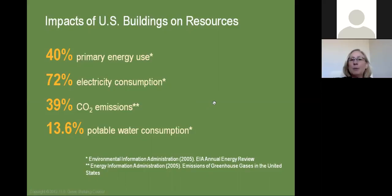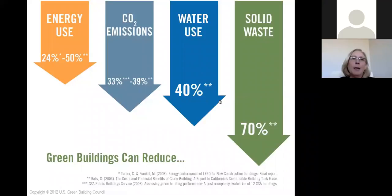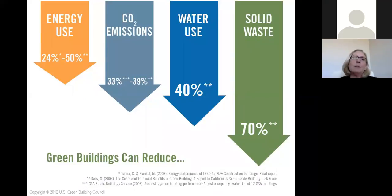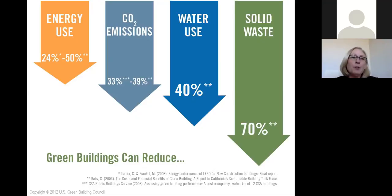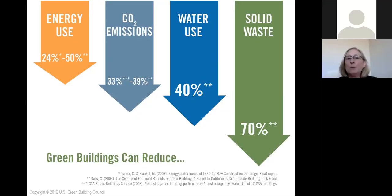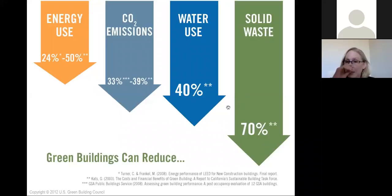Those are interesting breakdowns of consumption for our buildings. What kind of useful impacts can we make by learning about sustainability principles and best practices and applying them to the properties that we touch? Whether we're negotiating a lease in an office building, assisting a client with a site location for commercial property, or managing properties themselves, you have opportunities to reduce energy use anywhere from 24% to 50%, CO2 emissions 33% to 39%, water use 40%, and solid waste 70%. This is a key area where we can have fantastic and substantial impacts on our environment.